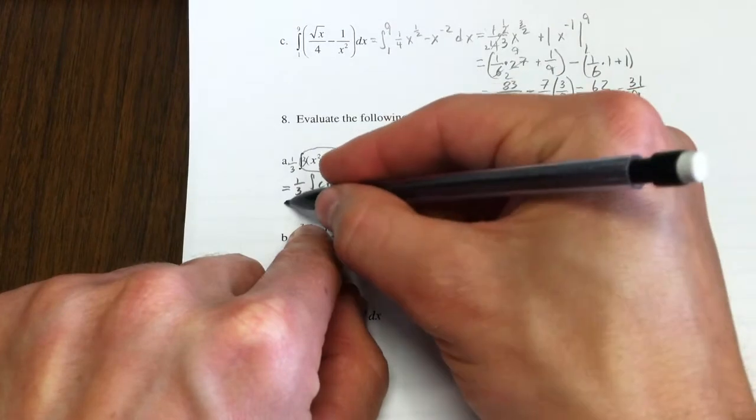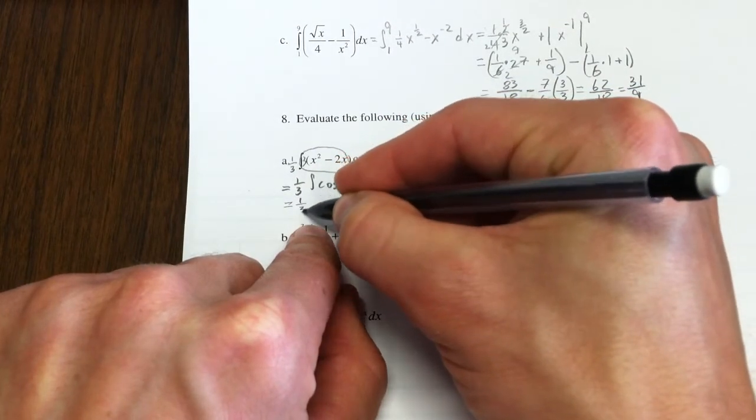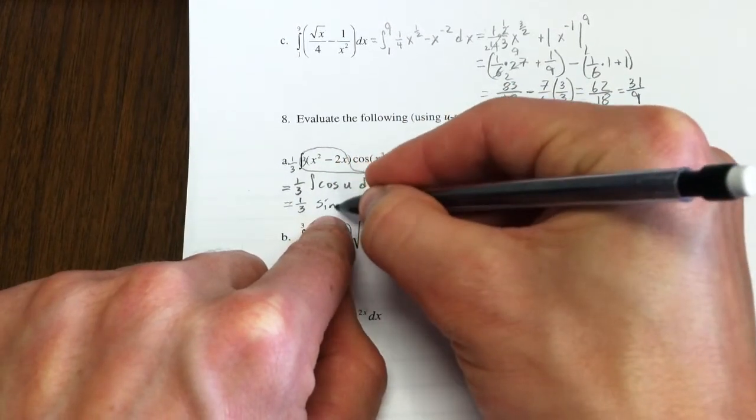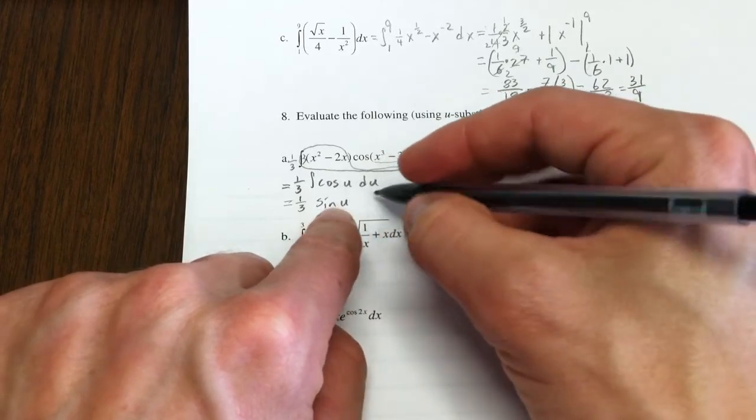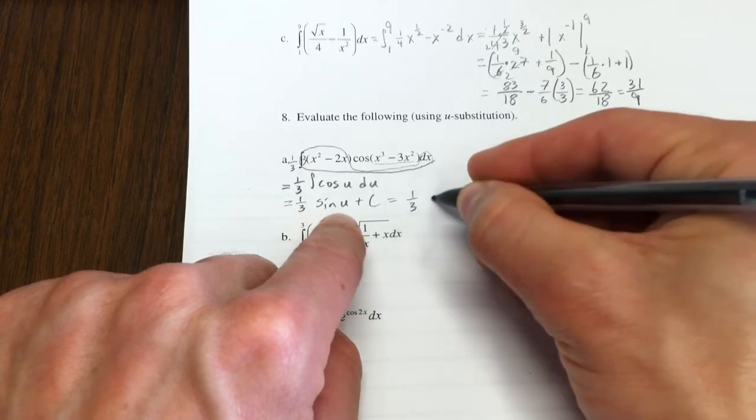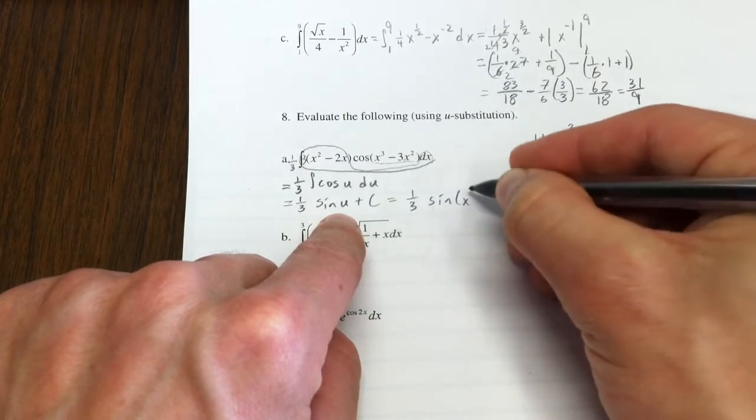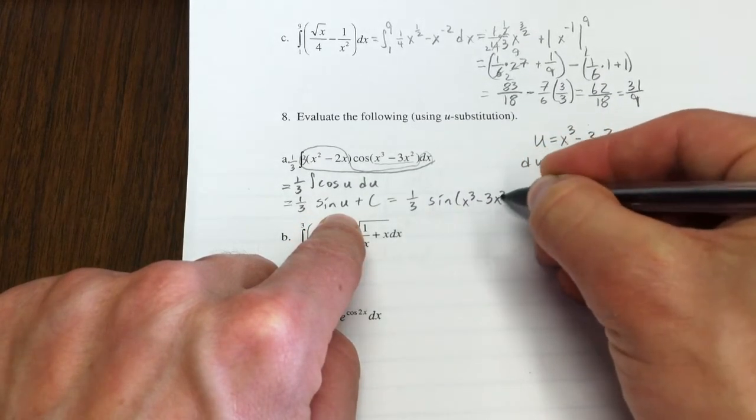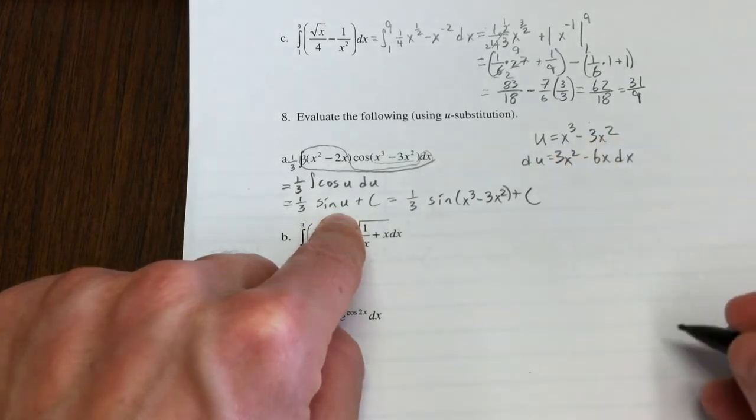Not all bad. The integral, or an antiderivative, of cosine u is sine u. So to get the integral, I'll put in a plus C. So one-third sine of x to the third minus 3x squared plus C. How about that?